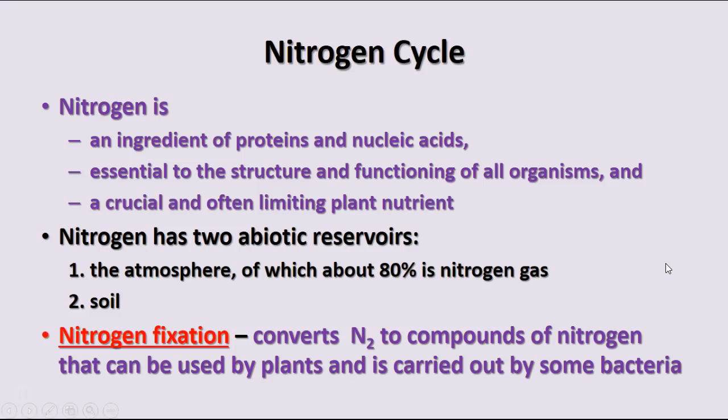The third major cycle is the nitrogen cycle. Nitrogen is required in nucleic acids and proteins, and is necessary to all organisms. It is also oftentimes a limiting nutrient for plants. There are two abiotic reservoirs of nitrogen: the atmosphere, which is about 75 to 80 percent nitrogen gas, and the soil. Most living things can't use elemental nitrogen gas, so we depend on bacteria in the soil for the process of nitrogen fixation, which converts nitrogen gas into compounds that can be used by plants.